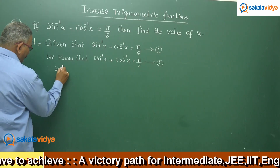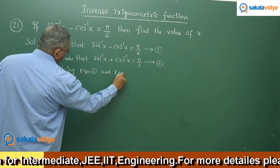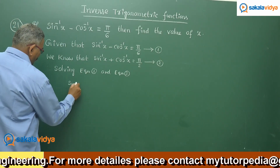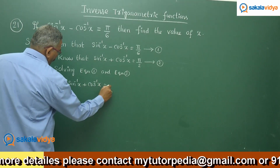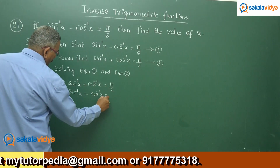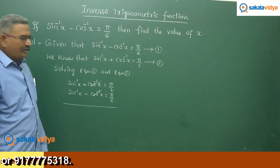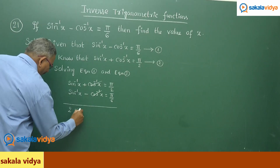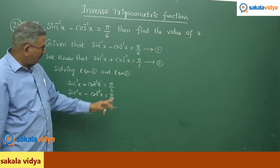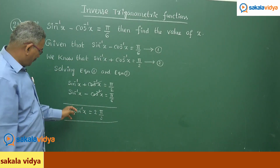Solving equation 1 and equation 2 — they appear to be linear equations in two variables. Sin inverse x plus cos inverse x equals pi by 2, which is equal to 90 degrees. Sin inverse x minus cos inverse x equals pi by 6, which is equal to 30 degrees. Adding, the cos inverse x terms get cancelled, and sin inverse x plus sin inverse x gives 2 sin inverse x equals 90 plus 30, which is 120 degrees. We can write 120 as 2 pi by 3. The 2 cancels.